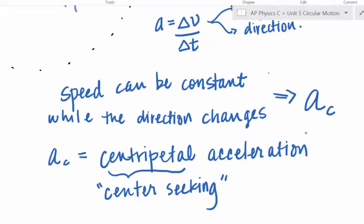I'm going to put a little C subscript, so it is A sub C, which stands for centripetal acceleration, where centripetal means center-seeking. I'm not actually a huge fan of the word centripetal because I think it causes some misconceptions, so if you called it the center-seeking acceleration I'd be just as happy — probably happier — than calling it centripetal acceleration.